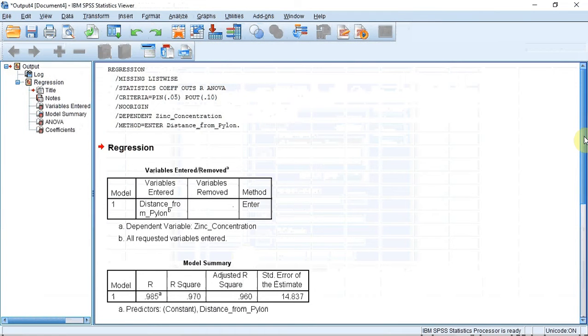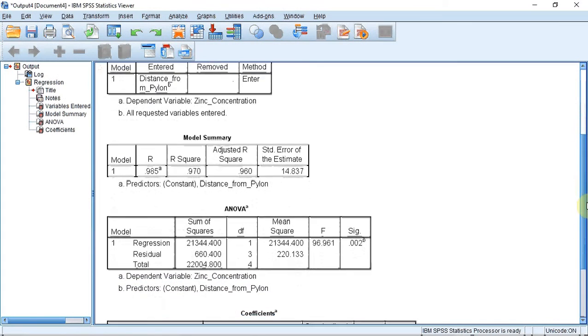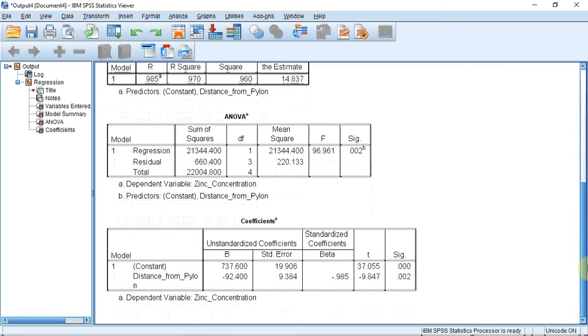The output window opens and gives us various boxes, including boxes calculating a coefficient value R, a significance using an ANOVA, but it's the fourth box, coefficients, that we are really interested in.